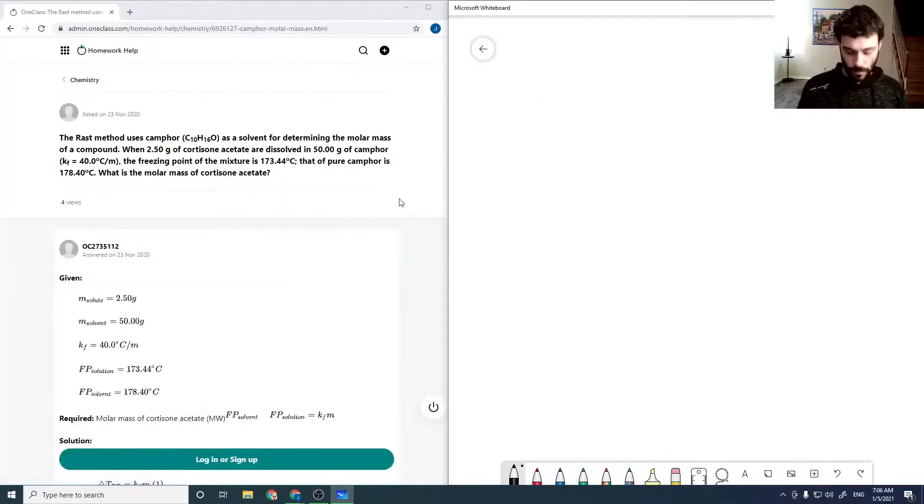Okay, so for my next question, it says the Rast method uses CAMP-4, which is C10H16O, to determine the molar mass of a compound based on freezing point depression.